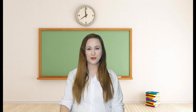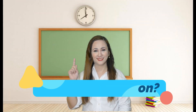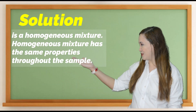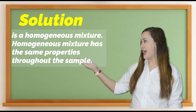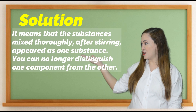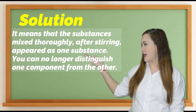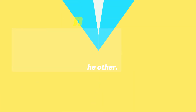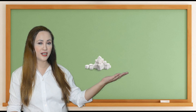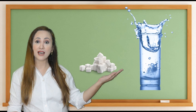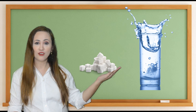Solutions are a type of mixture. What is a solution? A solution is a homogeneous mixture. A homogeneous mixture has the same properties throughout the sample. It means that the substances mixed thoroughly, and after stirring appear as one substance. You can no longer distinguish one component from the other. An example is a mixture of sugar in water. When sugar dissolves in water, the two substances appear as one. The sugar particles can no longer be identified.